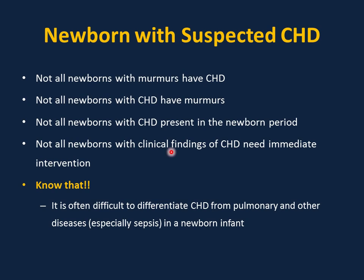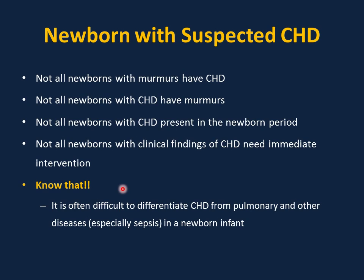Not all newborns with clinical findings of congenital heart disease need immediate intervention. For example, cases of ASD or atrial septal defect are usually repaired at the beginning of school age. It is often difficult to differentiate congenital heart disease from pulmonary and other diseases, especially sepsis, in a newborn infant. Cases of severe coarctation of aorta and hypoplastic left heart can be confused with sepsis and shock.